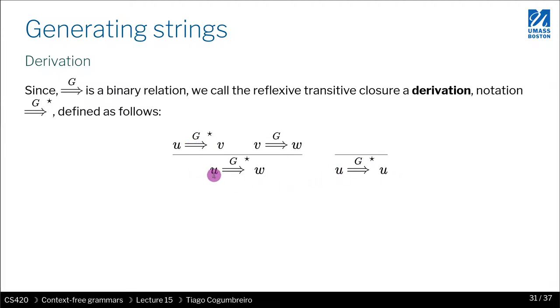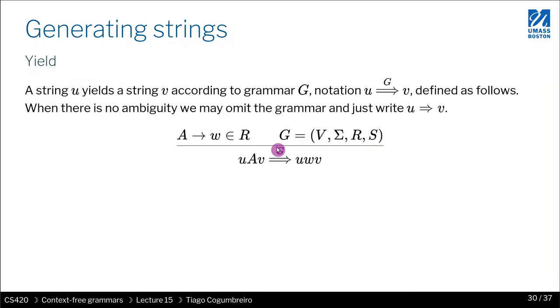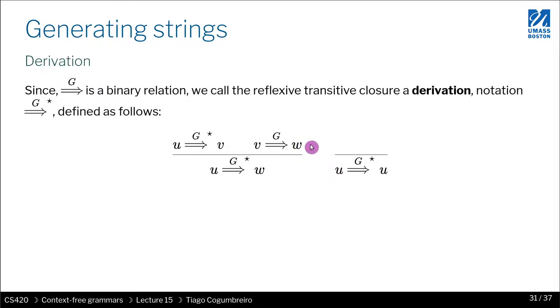Or if u can yield v in zero or more steps, and v can yield w in one step, then u can yield w in these many steps plus one. So this is another inductive definition where we're using the previous definition from the previous slide. It's very important that you understand this.